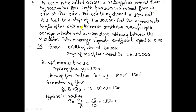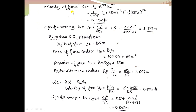Given: b = 10 m, S0 = 1/10,000. At upstream section 1 (Y1 = 1.5 m): A1 = 15 m², perimeter P1 = 13 m (B+2Y), hydraulic radius R1 = A1/P1 = 1.154 m. Velocity V1 = (1/n)R^(2/3)S0^(1/2) = 0.55 m/s. Specific energy E1 = Y1 + V1²/2g = 1.515 m.